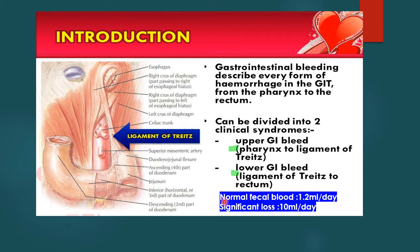Normally, the stools contain some amount of blood which is secreted or lost daily. It is estimated that 1.2 mls per day can be normal. The significant loss is when it reaches 10 mls per day — if there is a loss of 10 mls per day of blood in the stool, it is pathological and needs to be investigated.